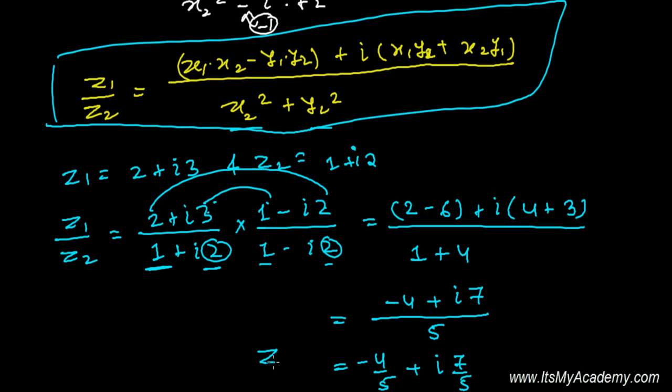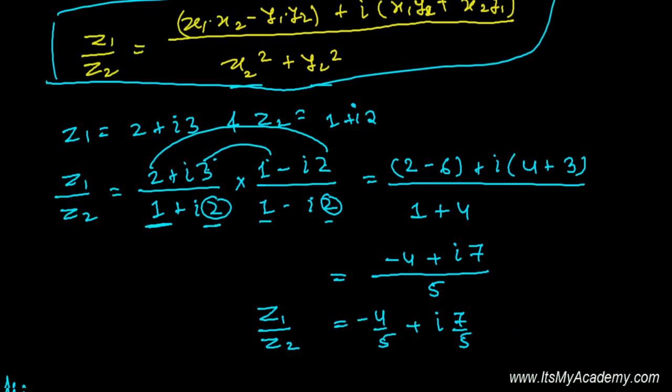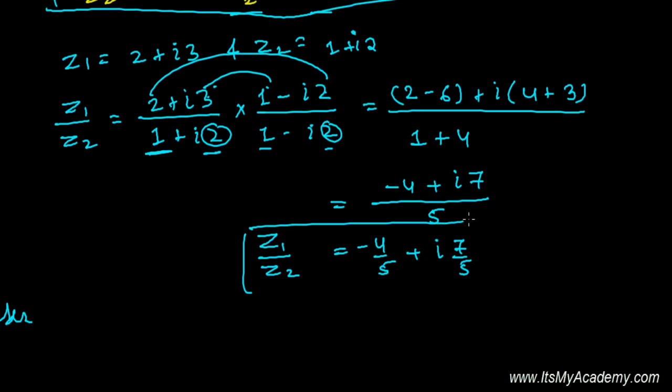That's the division of two complex numbers. Let me tell you one thing: the division of two complex numbers also results in a complex number. After adding, subtracting, multiplying, or dividing, the final answer will also be a complex number.